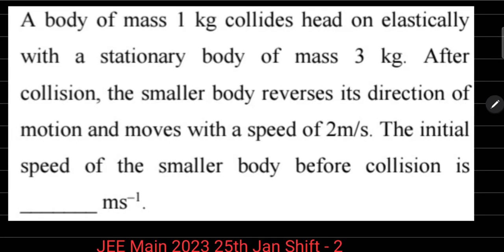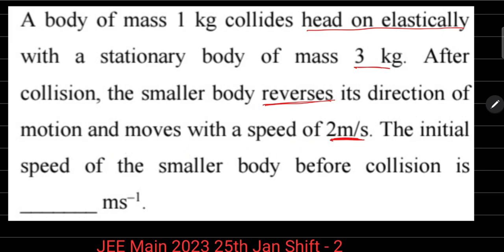This is the 25th Giant Shift 2. A body of mass 1 kg collides head-on elastically with a stationary body of mass 3 kg. After collision, the smaller body reverses its direction and moves with a speed of 2 meter per second. The initial speed of the smaller body before collision is to be found.